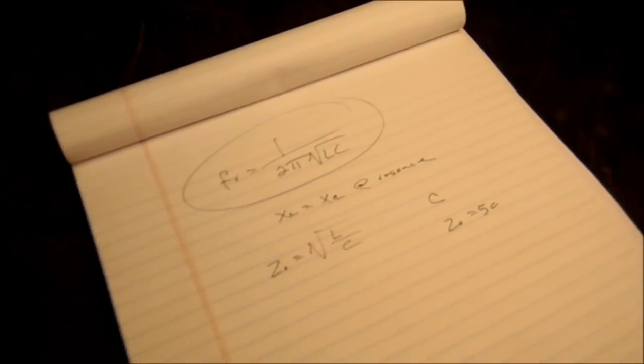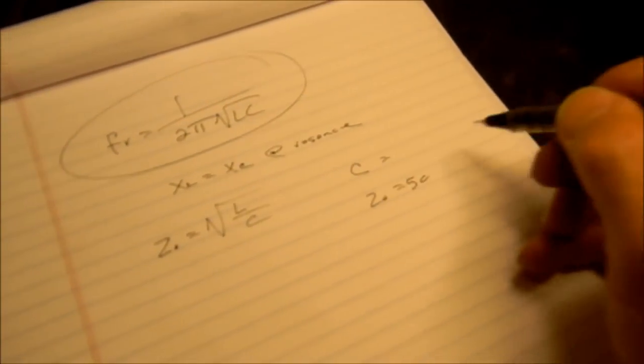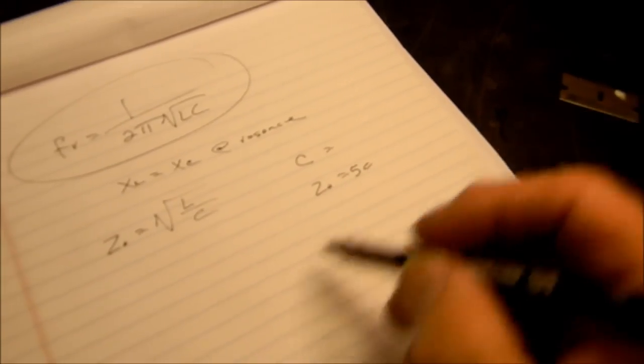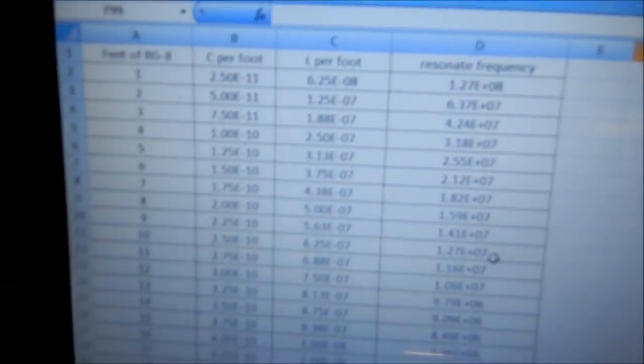What we're going to do is directly measure C and we'll get a number for that. We know Z0, so we'll calculate L. And then we'll put it into, and I've already done all this of course, we'll put it into an Excel spreadsheet right here. This is the number of feet. This is the capacitance for one foot, and this is per foot over here.